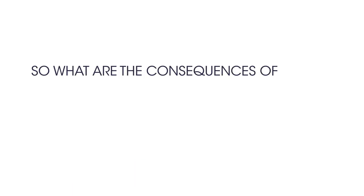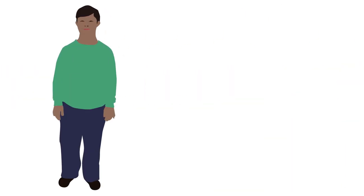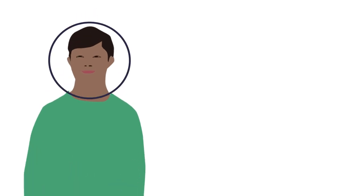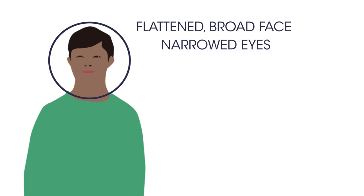So what are the consequences of having an extra chromosome for people with Down's syndrome? The difficulties vary in severity. Facial characteristics can include a flattened, broadened face and narrowed eyes. But people with Down's syndrome don't all look the same — they also look like their parents and family.